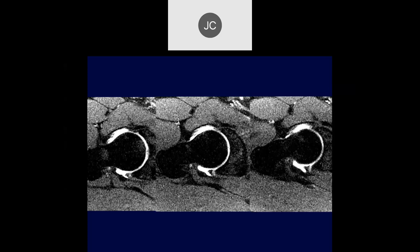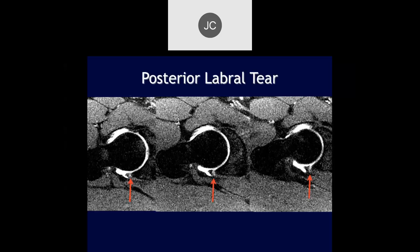Tason — this is a very old arthrogram. The posterior labrum looks like there's probably a tear there — not quite linear like the sulcus pictures. The margins are not sharp. We don't really see fluid going into a typical sulcus. This is more increasing intensity within the labrum because it's abnormal, with contrast kind of oozing into the soft tissues of the labrum. This was confirmed as a tear, even without a paralabral cyst.